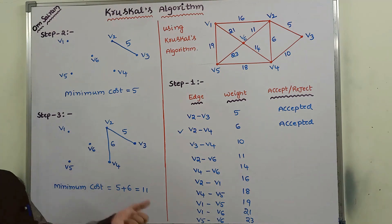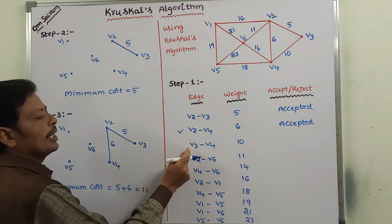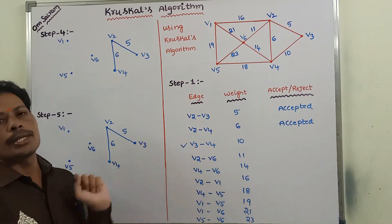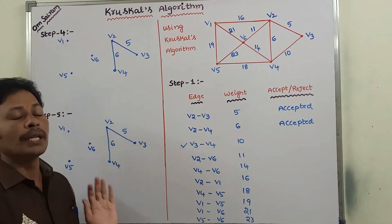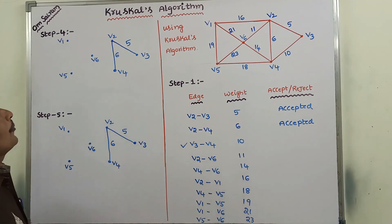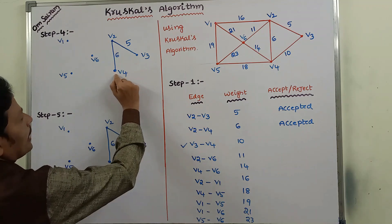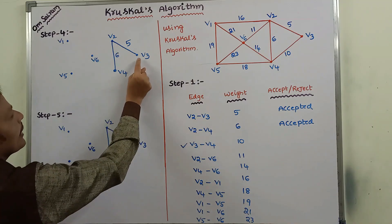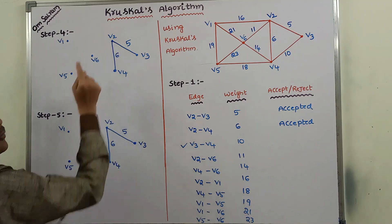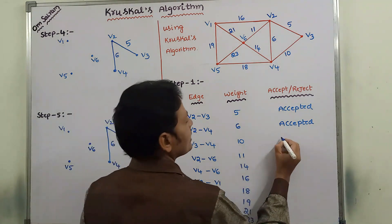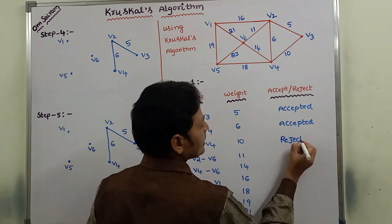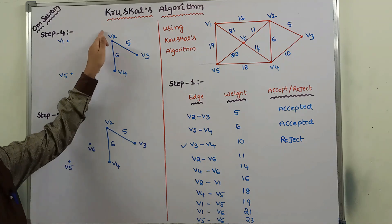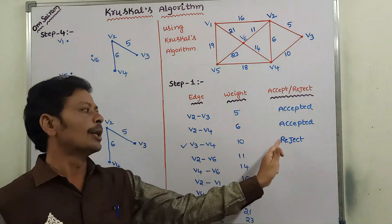Next, we go to another minimum cost edge, V3 to V4 with weight 10. Can this edge be added to the spanning tree without forming a cycle? After adding V3 to V4, it can form a cycle: V2 to V3, V3 to V4, V4 to V2. So this edge is rejected, because after adding it a cycle is formed.